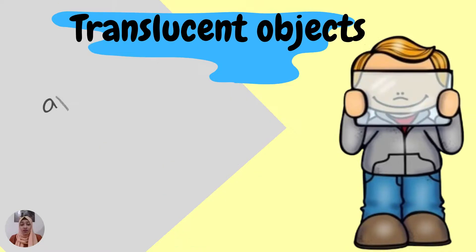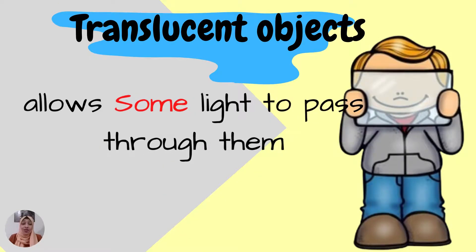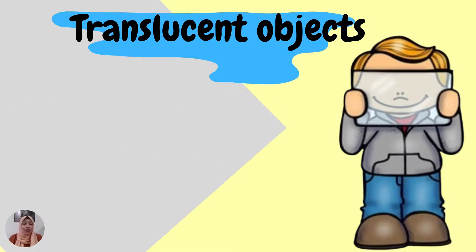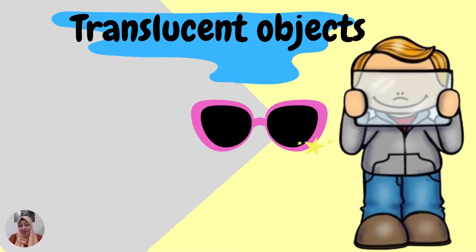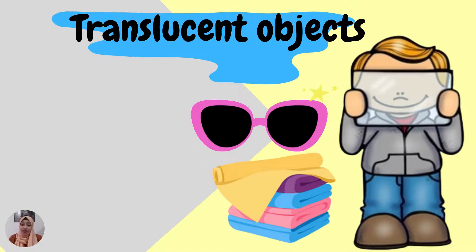The second type is the translucent object. Translucent objects allow some light to pass through them. When we look at the boy's face, we can see it but not as clearly as with transparent objects. Some light passes through and some light is blocked, so there will be a shadow — but a light shadow, because only some light is blocked. Examples of translucent objects are sunglasses, fabric, and tissue paper. These translucent objects form shadows but not very dark shadows.